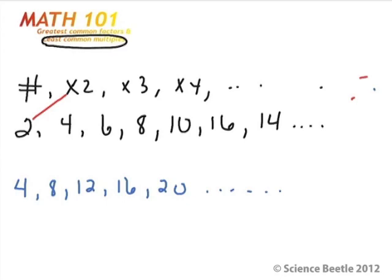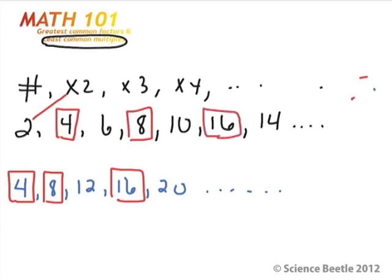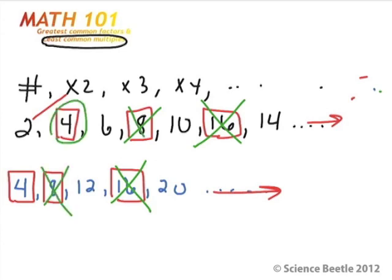Since the first number is 2, let's see what number is in common with multiples of 4. We notice right off the bat that 4 is common to both. Also 8 is going to be common for both. And if we keep going, we see that 16 is also common to both. But what we're going for is the least common multiple. We can rule out 16 since it's not the smallest. We can look at 8, but 8 is greater than 4, so we rule that out. That leaves 4 as the least common multiple — LCM equals 4.